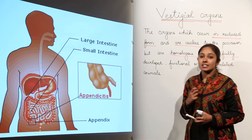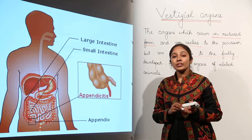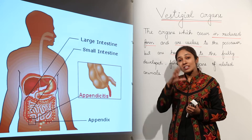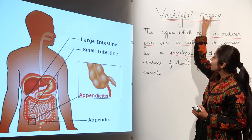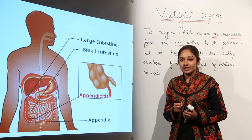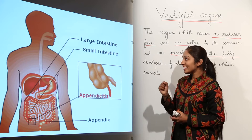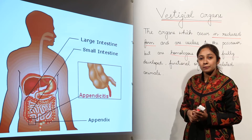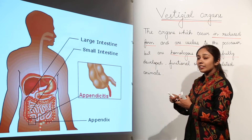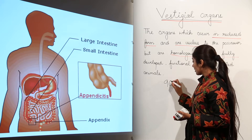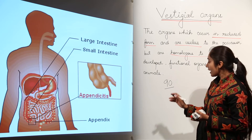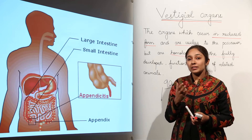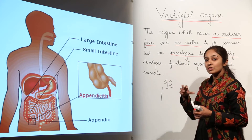Let us talk about ourselves first — the human body. We are going to study vestigial organs in the human body because when we talk about the theories of evolution, vestigial organs hold a very important point. Initially, scientists reported that there were around 90 vestigial organs in human body. But now this number is reduced because at that time, vestigial organs were not properly studied.